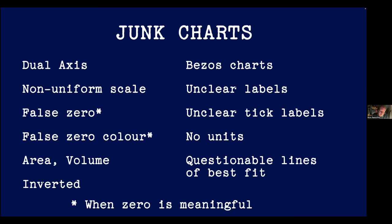If zero is arbitrary, like on the Celsius or Fahrenheit scale, it's fine not to start at zero. But if it's a real zero like absolute zero, you need to include it. The same applies to color maps and choropleths. Try not to use area and volume to represent quantities because people are terrible at understanding those. Don't invert your charts. Try to avoid Bezos charts — all the charts Jeff Bezos liked at Amazon, which have no numbers and just show a directional change. Avoid unclear labels and missing units. Be super careful about lines of best fit, especially with too many degrees of freedom.